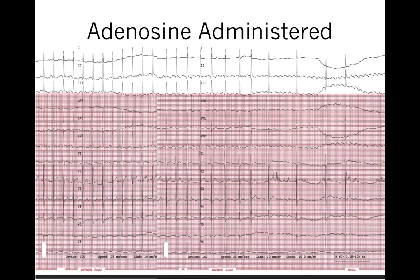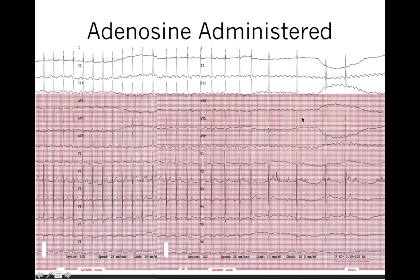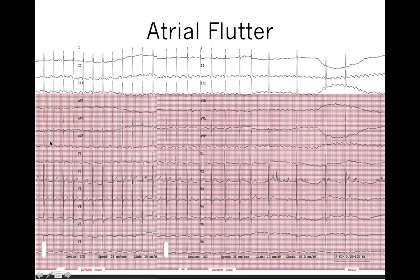Adenosine is given with transient block of the AV node. The tachycardia is going, then there is AV nodal block — and if we were to continue, the tachycardia resumes just like before. However, during this pause, you see a sawtooth pattern in the inferior leads. So the answer is atrial flutter. This is atrial flutter with 2-to-1 conduction; it's simply difficult to see the flutter waves when the heart rate is so fast, but when you block the AV node, it's easier to see the flutter waves.